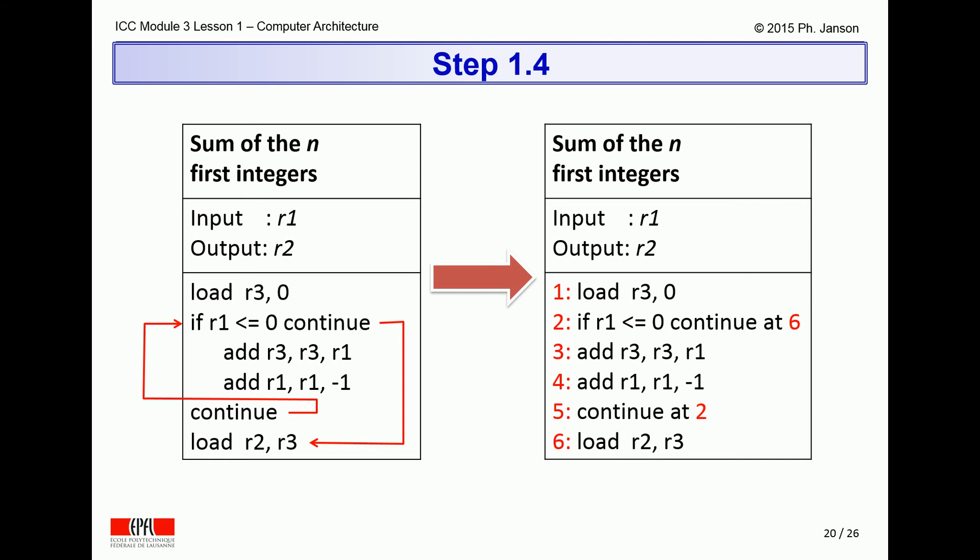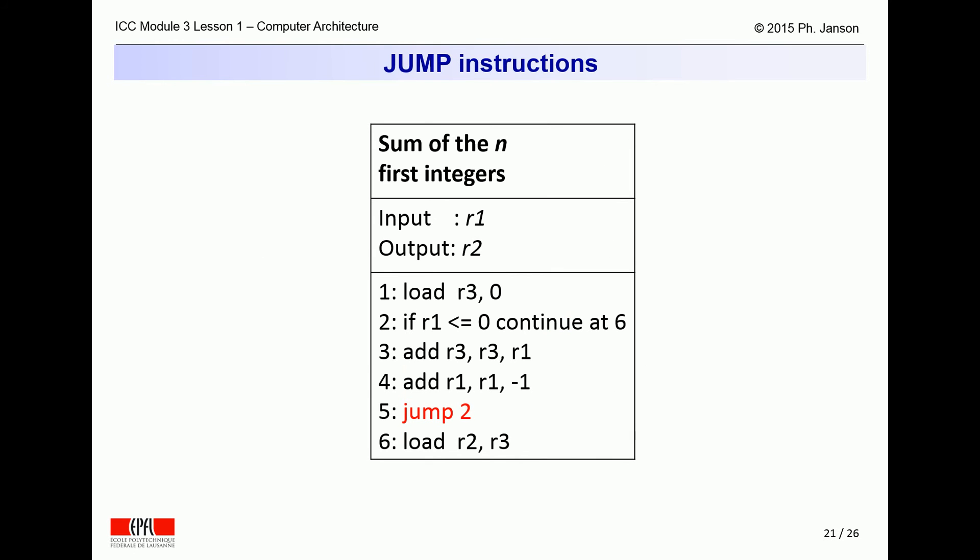That way, the algorithm can be rewritten as on the right side of this slide. Each line is numbered, and arrows are replaced by line numbers in the algorithm. This is, however, once again, not sufficient, as a computer cannot comprehend as loose and colloquial a command as continue at 2. It needs a formal way to express an instruction to jump to a given line number.